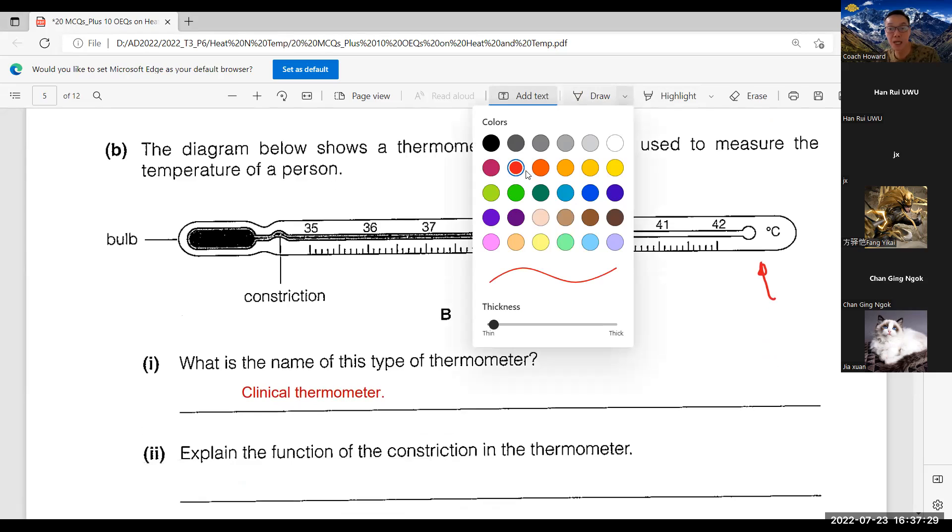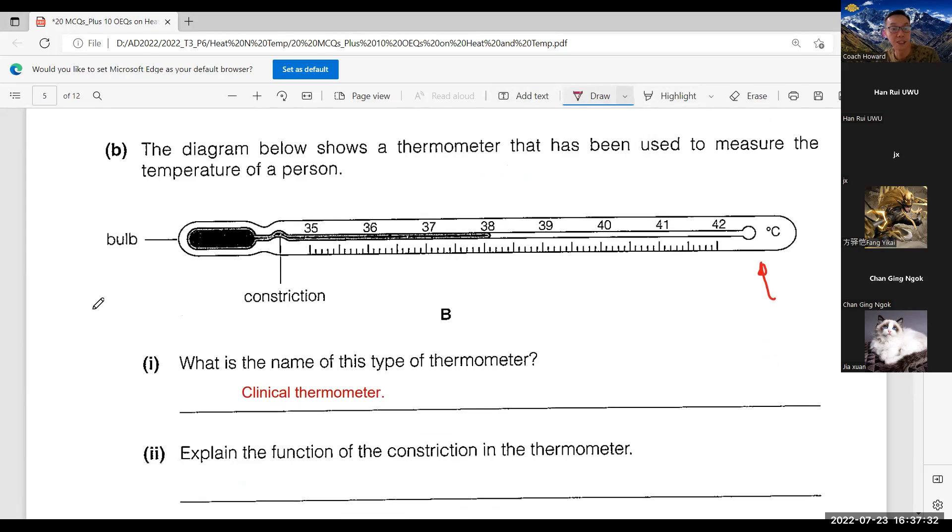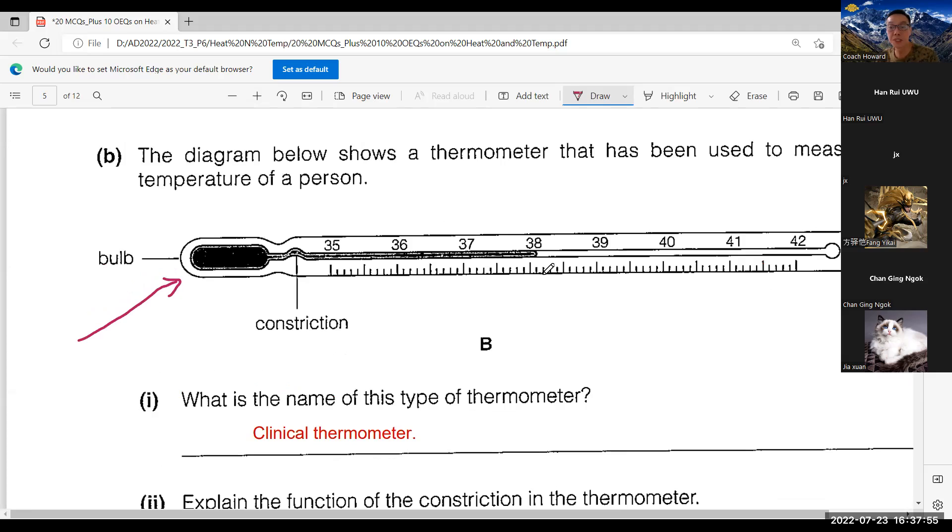How does this work? In the past, before the digital thermometer was invented, when Mr. Yu go to see doctor with a fever, the doctor will tell us open our mouth and this part, the bulb, will be put under our tongue. Because we are warm blooded, our normal body temperature is about 36.9 to 37 degrees Celsius. If you have a fever, the temperature recorded is 38.1.